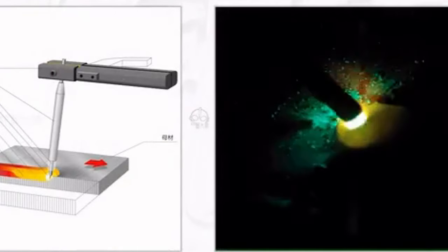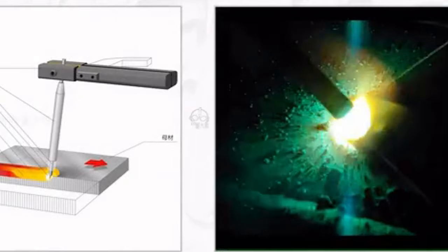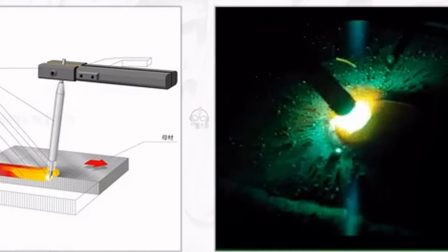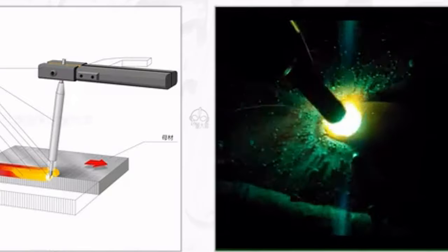Welding is a process in which two or more metal atoms on the surface of weldments are combined to form a whole by heating and pressurizing or using them at the same time. There are many types of welding processes.